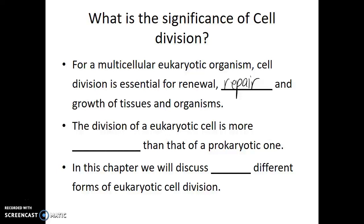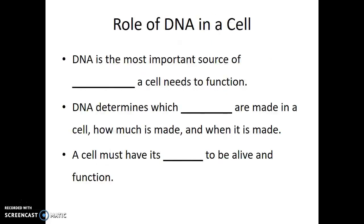The division of the eukaryotic cell is more complicated compared to that of a prokaryotic cell. In this chapter, we will discuss two different forms of eukaryotic cell division. If a cell is going to divide, we need to know a bit about its genetic material and what it needs to do with that genetic material. DNA is the most important source of information that a cell needs to function — it determines which proteins are made in a cell, how much of those proteins are made, and when those proteins are made. A cell must have its DNA in order to be alive and to function.